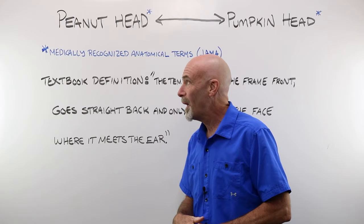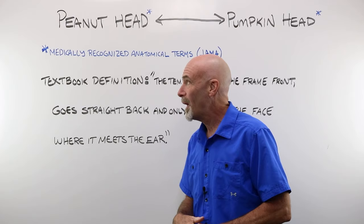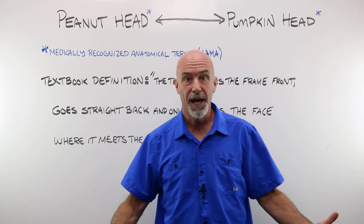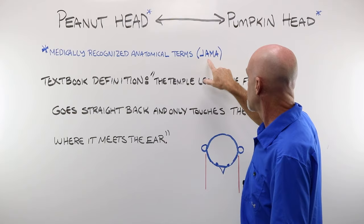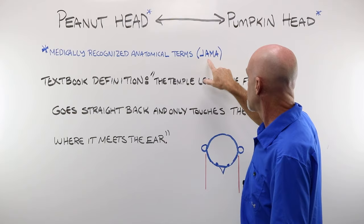If you have been in the opticianry game for a little while now, you probably have noticed that people come in all different sizes. You've got your little peanut heads all the way up to your pumpkin heads. And yes, those are medically recognized anatomical terms from the Journal of the American Medical Association.